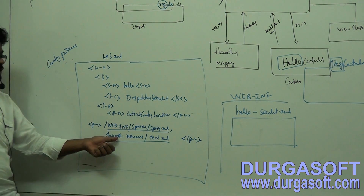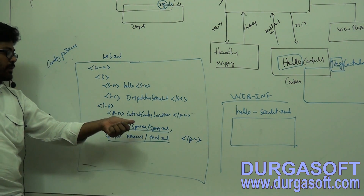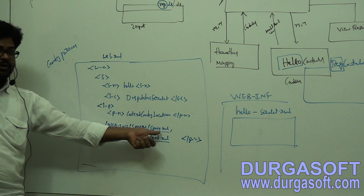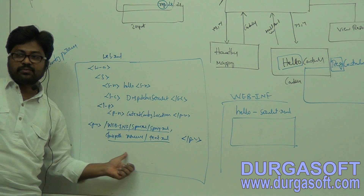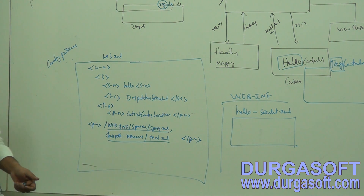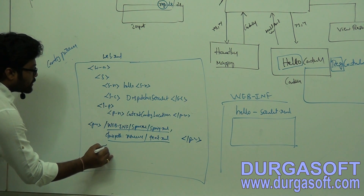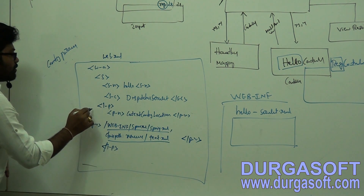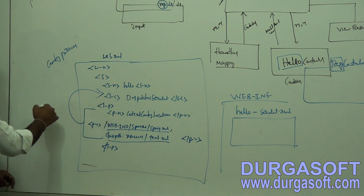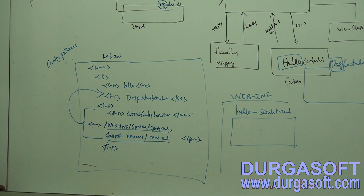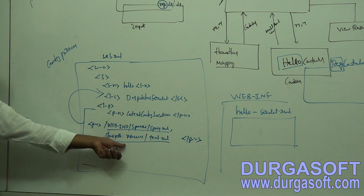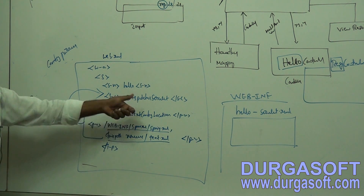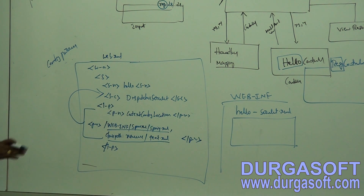From classpath, if you want to load, put the classpath prefix and load that XML file. From web-inf, if you want to load, first pass that web-inf XML file location, then next comma classpath location. By using init parameters you can do this. Init parameters will always be read only by the dispatcher servlet. By finding these init parameter values, it will read your XML files.